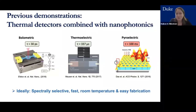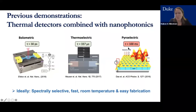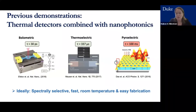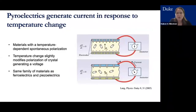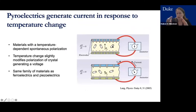Ideally we want something that is spectrally selective, fast, operates at room temperature, and allows relatively easy nanofabrication. We're actually picking pyroelectrics — which look most challenging from a speed perspective — because they allow easy integration with the metasurfaces we've worked with. Pyroelectrics are not as famous as their cousins, ferroelectrics and piezoelectrics, but pyroelectrics generate current in response to a temperature change. They have a temperature-dependent spontaneous polarization: without a temperature change the crystal has a certain orientation, and with a small temperature change the polarization changes slightly, giving rise to a current proportional to that temperature change.